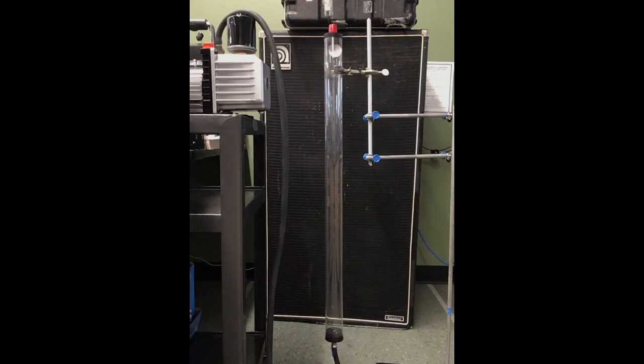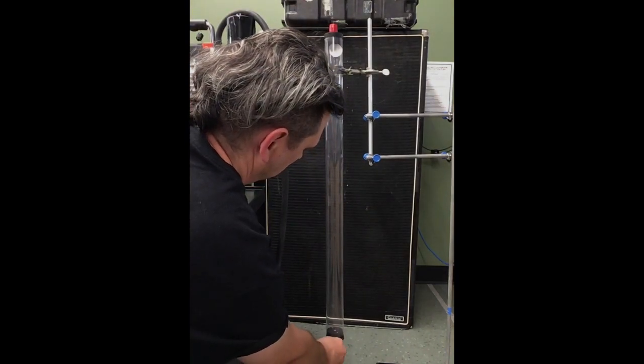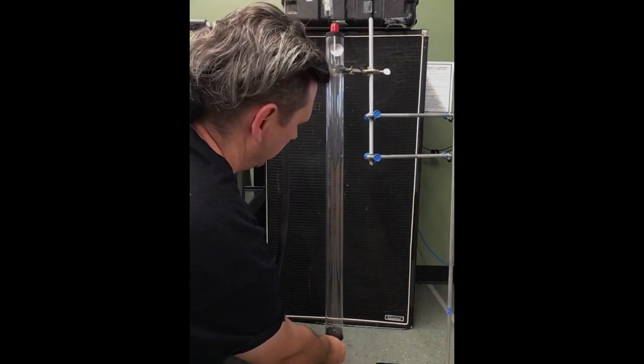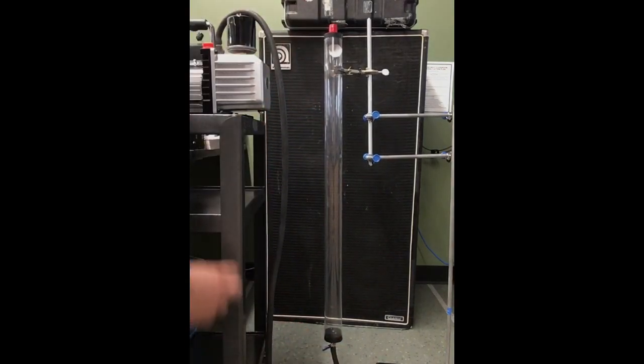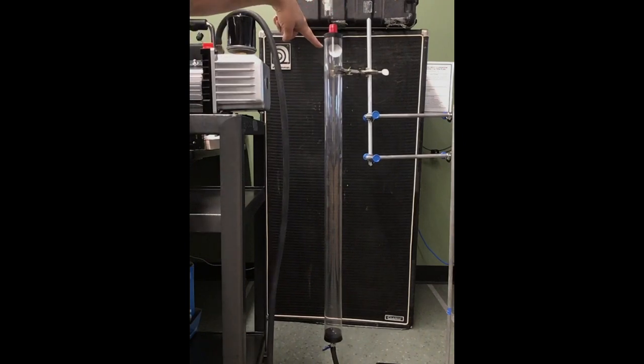And then down at the bottom we have this little valve. So I'm going to close this and then shut off the vacuum pump. So in theory there's no more air left in the tube. Now watch what happens when I release the coin and the feather.